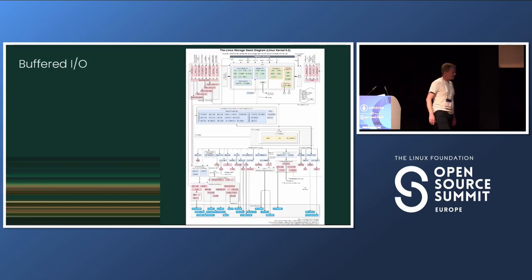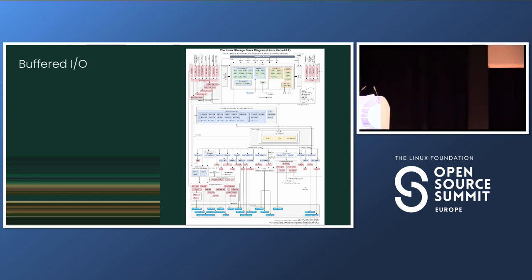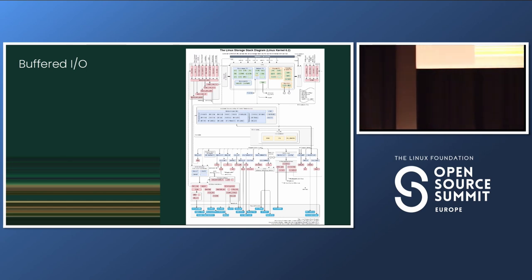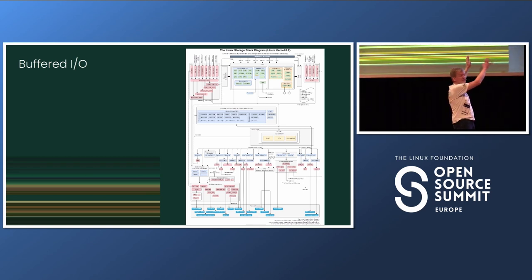For buffered I/O, some of you might know this diagram of the Linux storage stack. The really depressing thing is that we are just dealing with the little gray rectangle in the upper right corner — that's the area we are looking at. All of the remaining things are none of our concern.